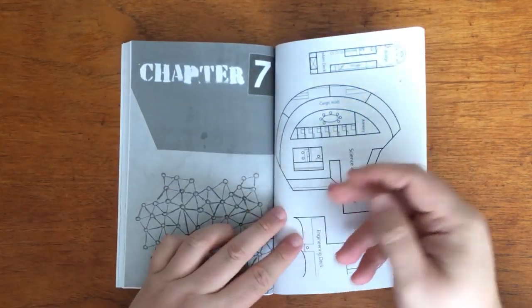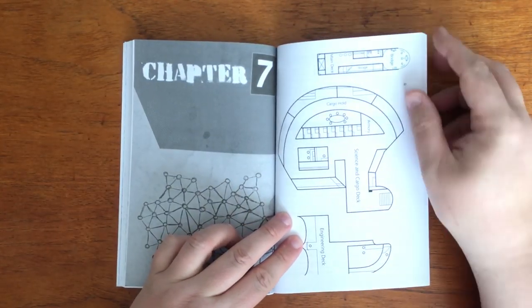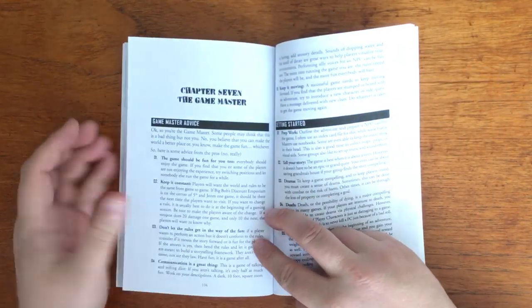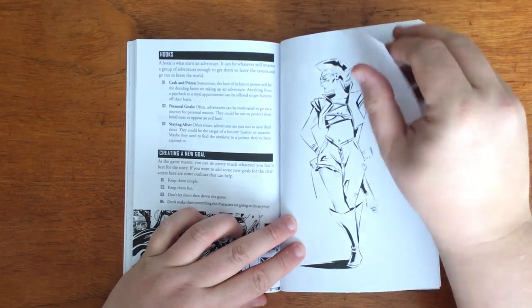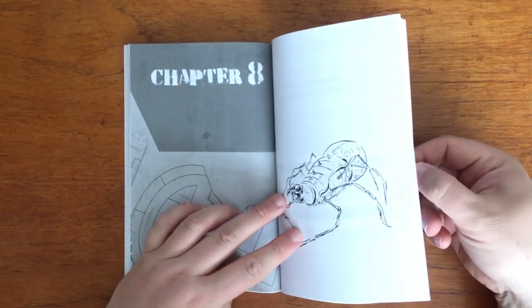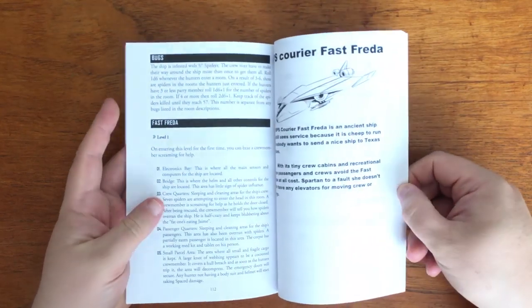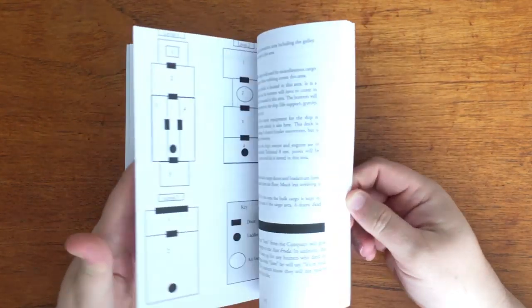Following this we have chapter 7, the Game Master. Here it gives a lot of good GM advice, which you will have pretty much seen everywhere else, and the final chapter 8 has a simple adventure to try out. I won't spoil it here, but I did find the maps overly simple and with no scale. Finally, at the back of the book we have a short story set in this universe and a simple character sheet.